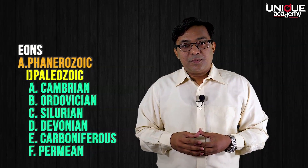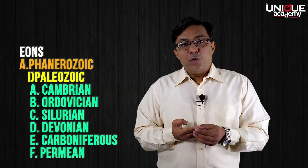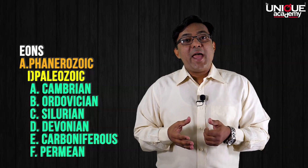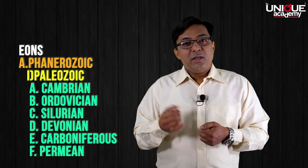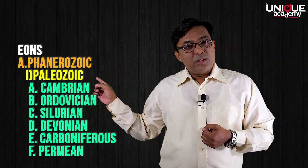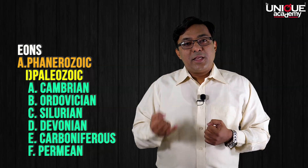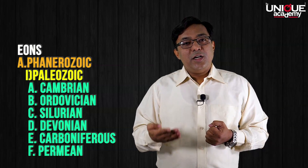The first era is Paleozoic, starting from 545 million years before present to 245 million years before present. Paleozoic is further divided into six periods: Cambrian, Ordovician, Silurian, Devonian, Carboniferous, and Permian. During Paleozoic, the Pangaea broke up.